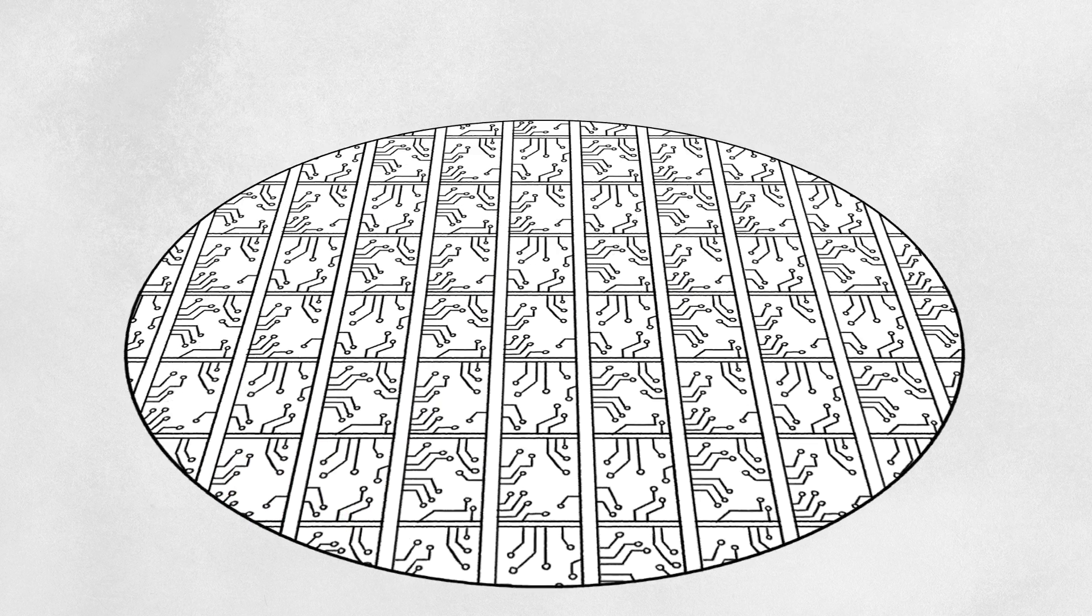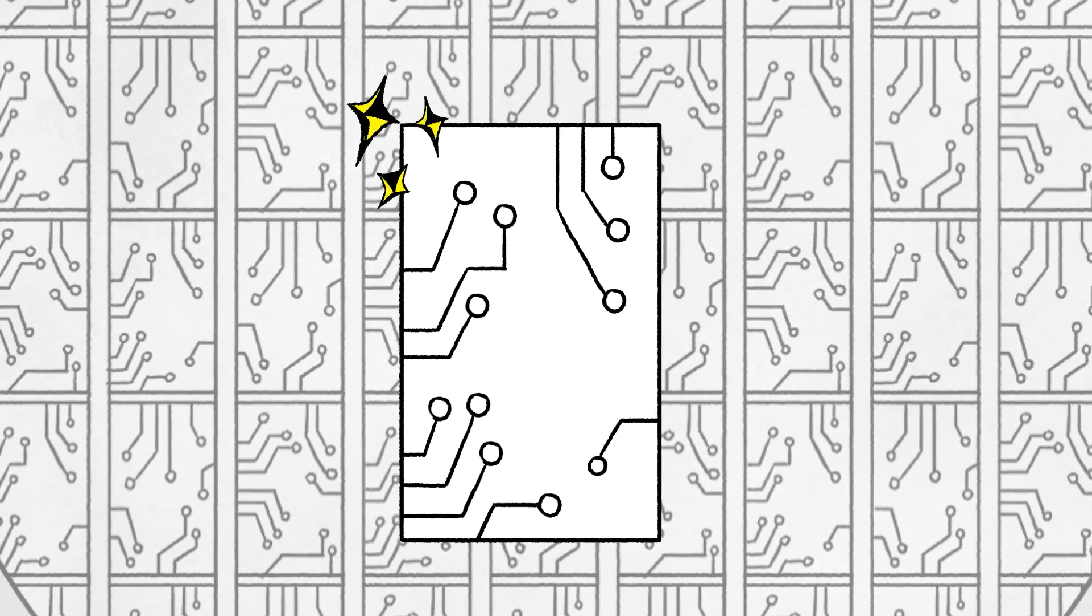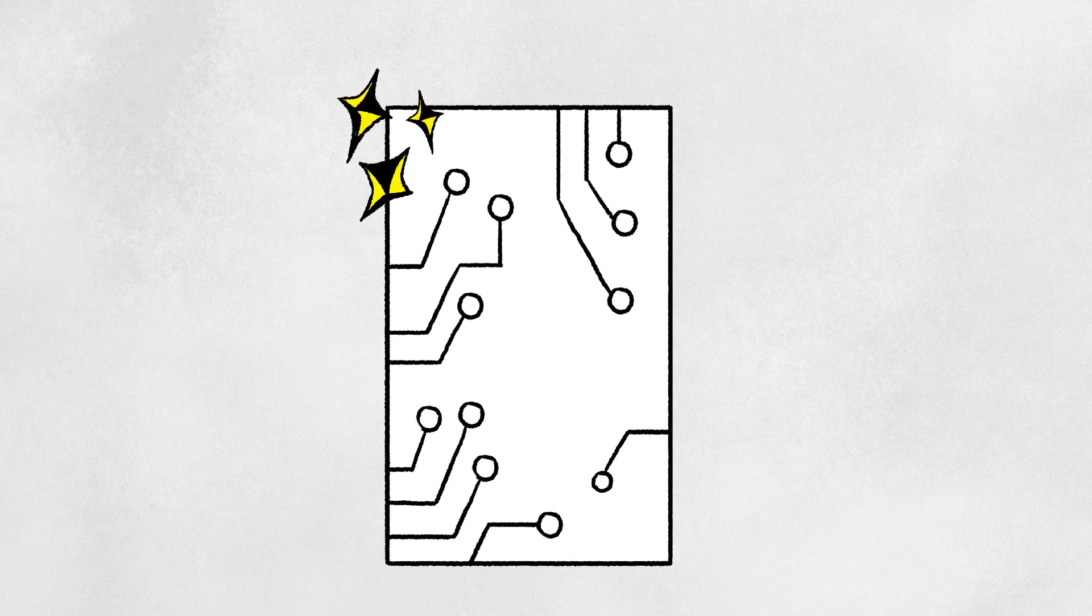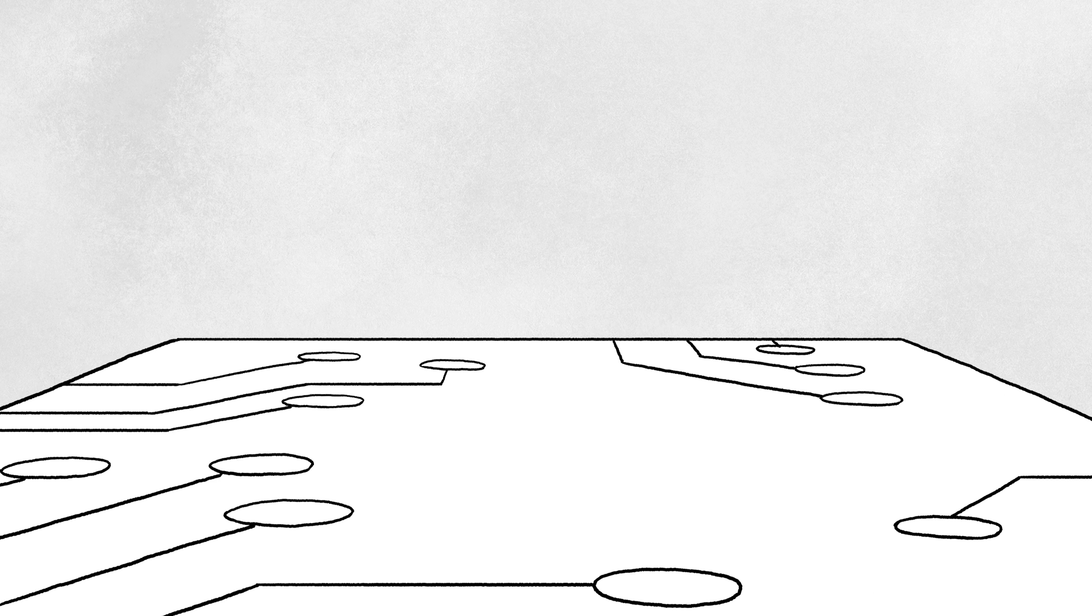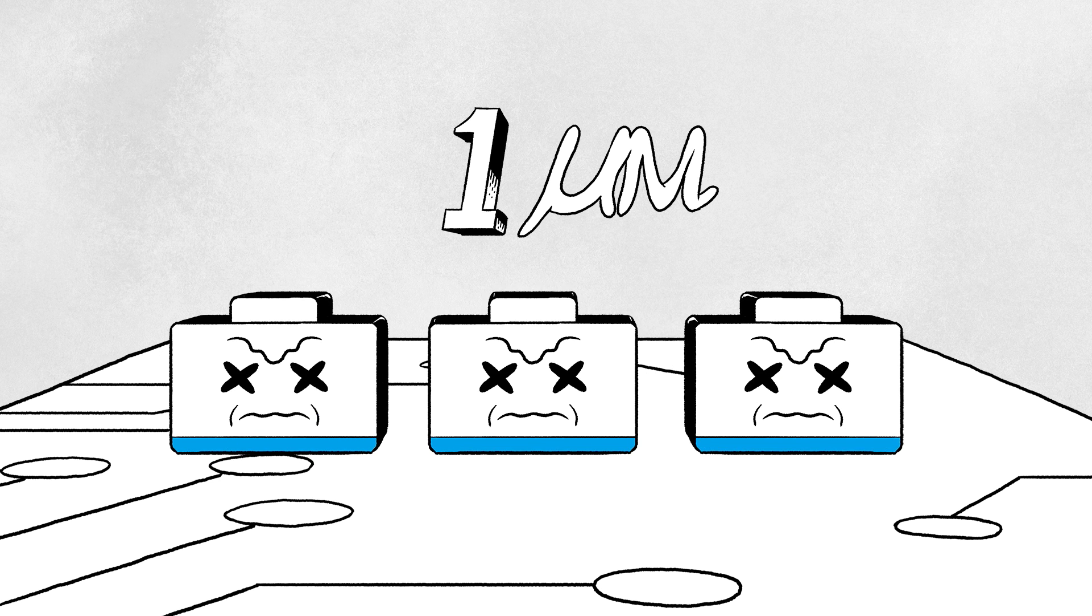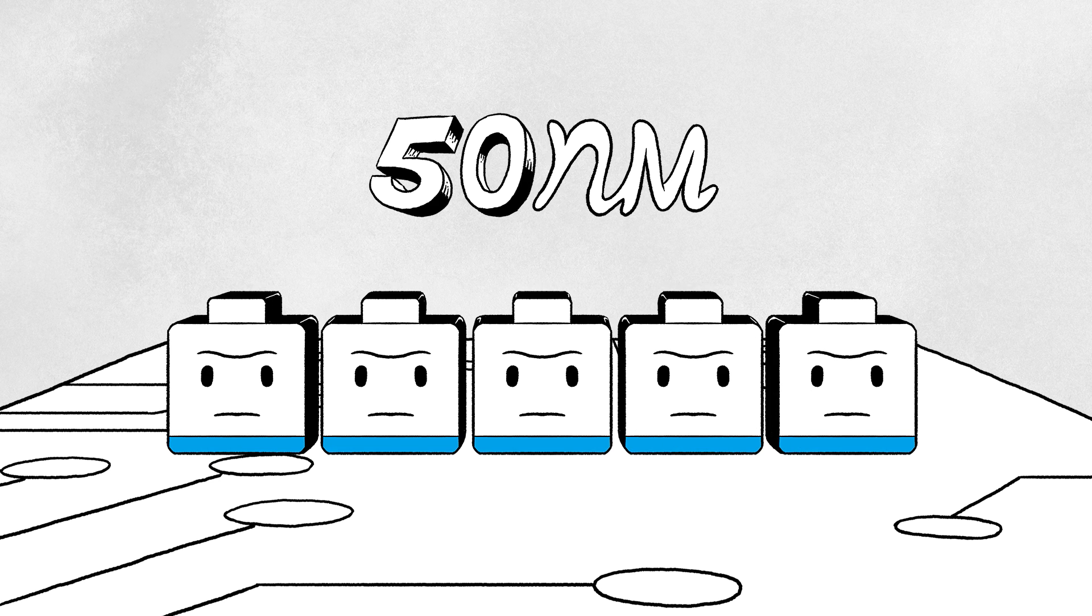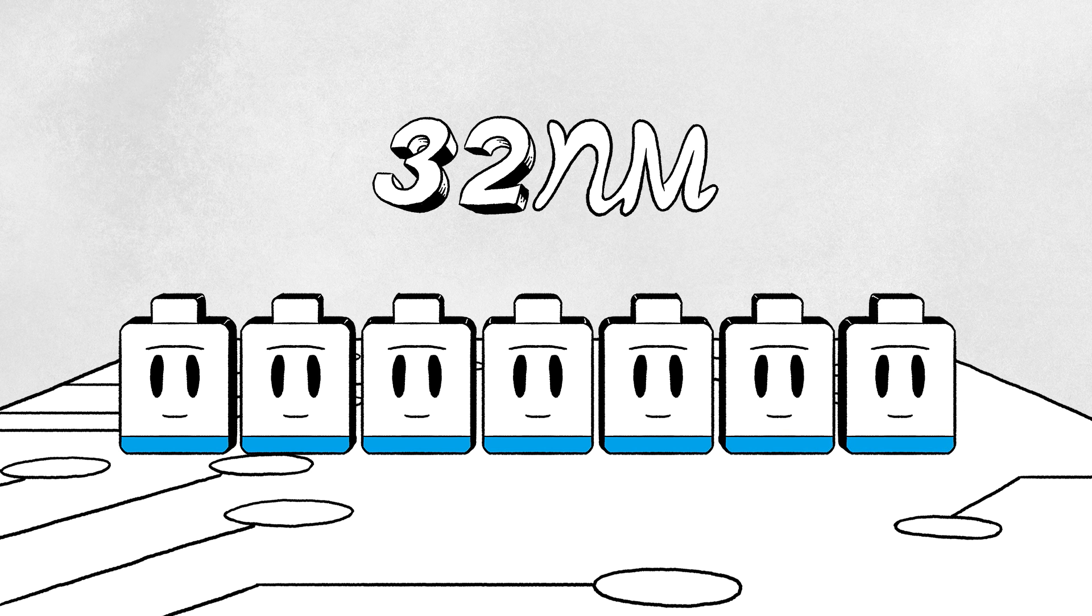Since billions of transistors must be placed inside this small area, it is very important to be small, yet precise. Semiconductor-making processes have evolved to reduce the width of the circuit, micrometers, and then nanometers at a time.